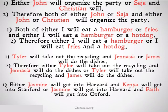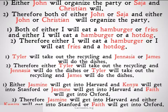Either Jasmine will get into Harvard and Kenya will get into Stanford, or Jasmine will get into Harvard and Faith will get into Oxford. Therefore, Jasmine will get into Harvard and either Kenya will get into Stanford or Faith will get into Oxford.